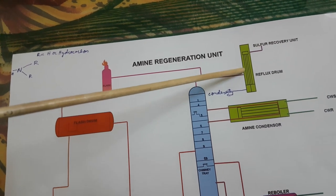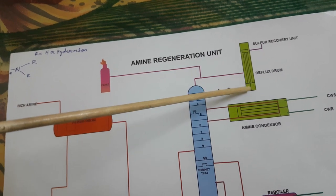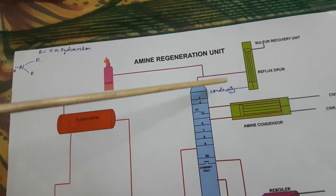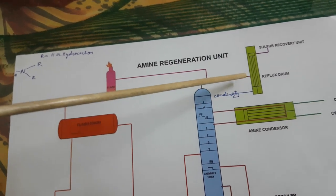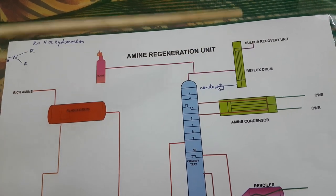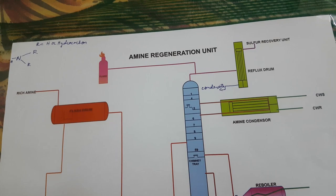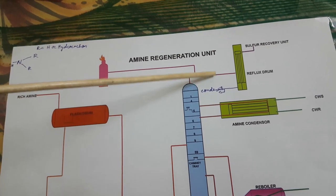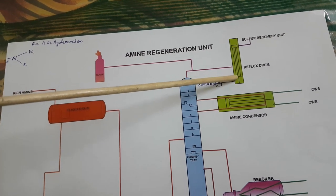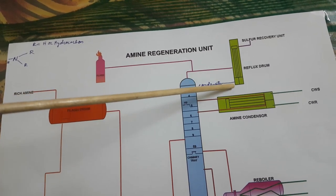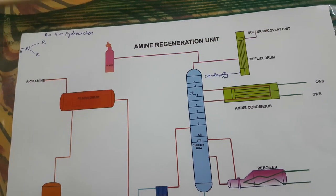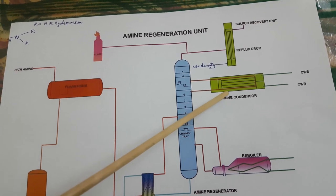This is the reflux drum. Sour gas which is removed from the rich amine goes up and from here goes to the reflux drum. Whatever condensate is there gets collected and is sent back to the column. The sour gas which is free from condensate — free from liquid — goes to the sulfur recovery unit, where hydrogen sulfide is converted to sulfur. This is the reflux drum, where condensate is removed and sour gas goes to the sulfur recovery unit.